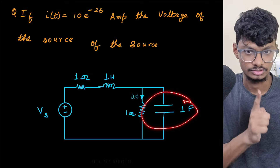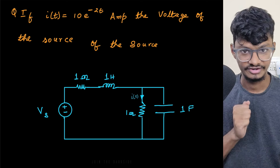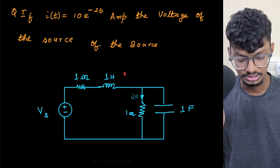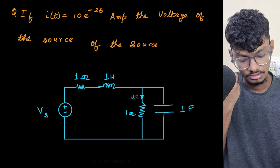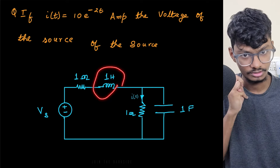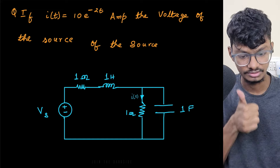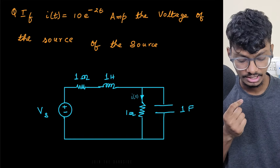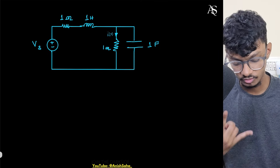If I know the voltage across the capacitor, I can compute the capacitor current since voltage and current are related by differentiation for a capacitor. Then I'll find the inductor current, and from that I can compute the inductor voltage using simple differentiation. Knowing the current also gives me the resistor voltage, and overall I'll be able to compute Vs.